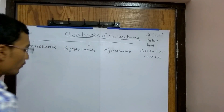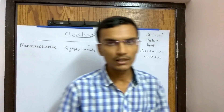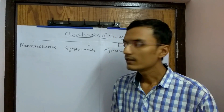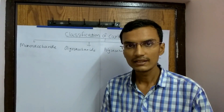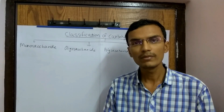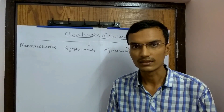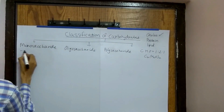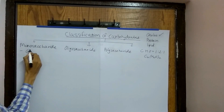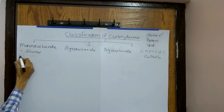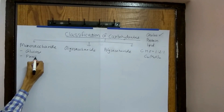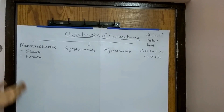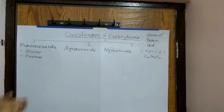Monosaccharide is a simple sugar — it contains only one monomer. It is a single simple sugar and cannot be hydrolyzed further. Examples of monosaccharides are glucose and fructose.